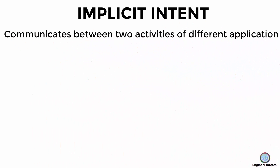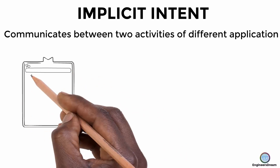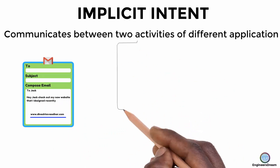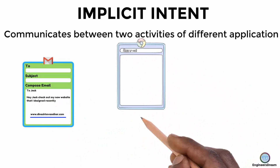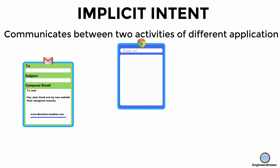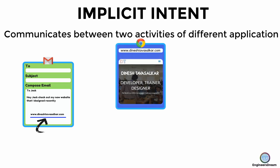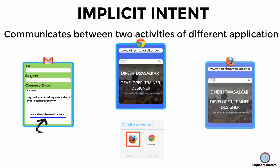For example, suppose you have two applications on your smartphone: one is an email application and the second is a web browsing application. Both applications have their individual activities, as you can see here. Now if you click on a URL link inside the email app, this link will open inside a web browser. If you have two web browsing applications on your smartphone, we can use intent to call a chooser component — meaning it will ask you which web browser you want to use to open this URL.